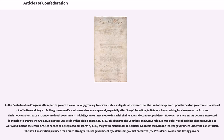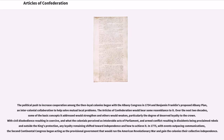The new Constitution provided for a much stronger federal government by establishing a chief executive, the president, courts, and taxing powers. The political push to increase cooperation among the then-loyal colonies began with the Albany Congress in 1754 and Benjamin Franklin's proposed Albany Plan, an intercolonial collaboration to help solve mutual local problems. The Articles of Confederation would bear some resemblance to it.